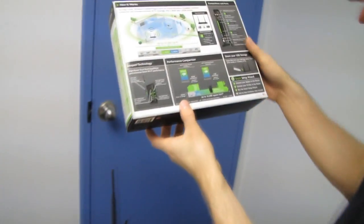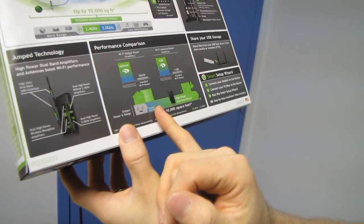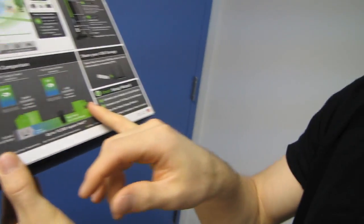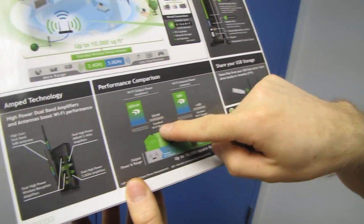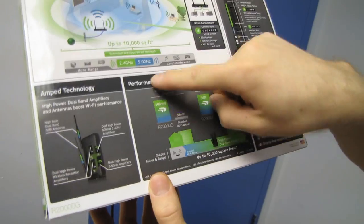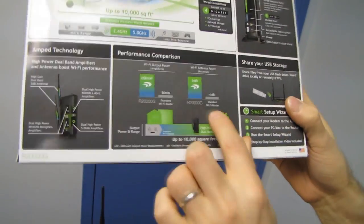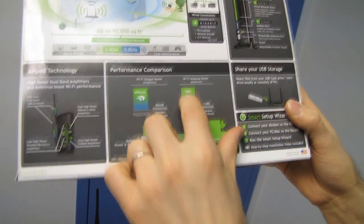On the back. So they talk performance comparison. Standard Wi-Fi router. Wow. High power dual band router. And standard Wi-Fi router output. Wow. This router output. So standard Wi-Fi router antennas. Wow. This router.